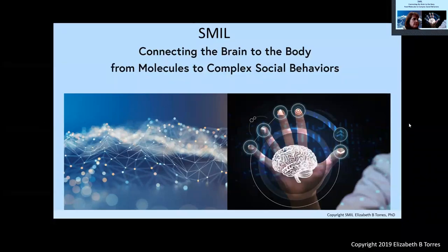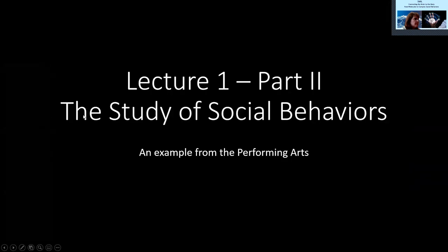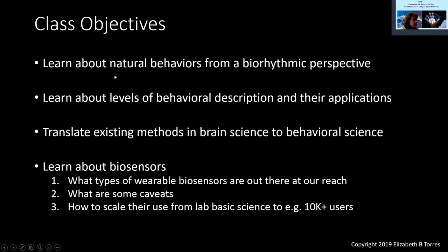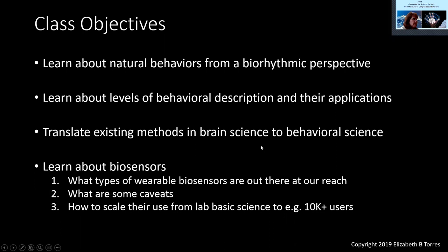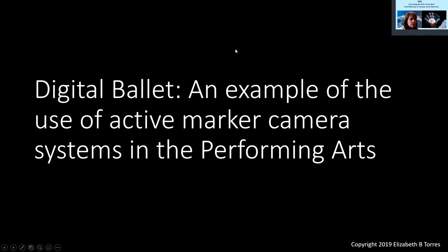Welcome again to our second part of lecture one, the study of social behaviors. In this case we are going to go over an example from the performing arts — dancer interactions — and how to analyze that data. Just a reminder of the class objectives: we are going to learn about natural behaviors from a biorhythmic perspective, about levels of behavioral description and their applications, and we are going to translate existing methods in brain science to behavioral science and learn about biosensors in general.